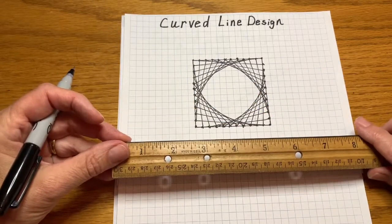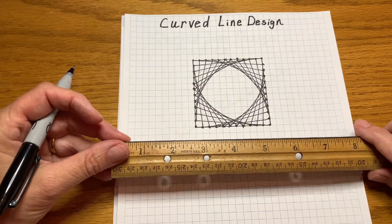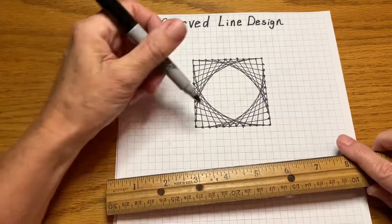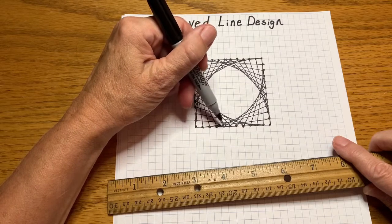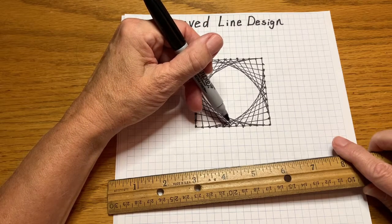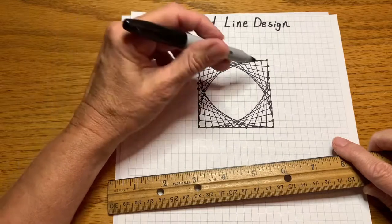You need to use a straight edge or a ruler. The dots that you're connecting need to be the same increment apart, so they need to be evenly spaced on all sides.